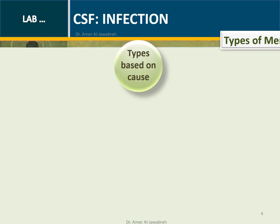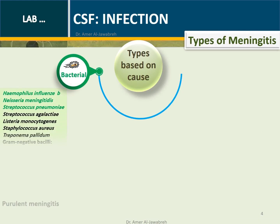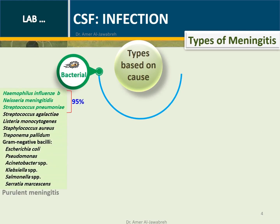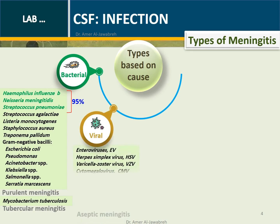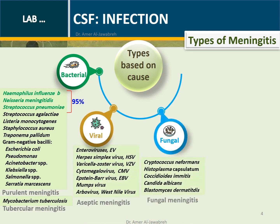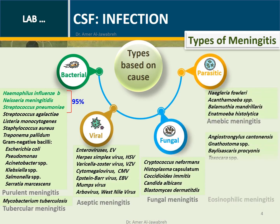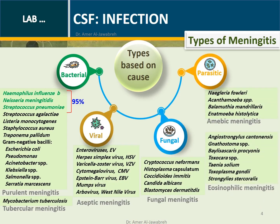CSF Infection — Types of meningitis: Bacterial, causing purulent meningitis or tubercular meningitis; Viral, causing aseptic meningitis; Fungal meningitis; and Parasitic, causing amoebic meningitis or eosinophilic meningitis.